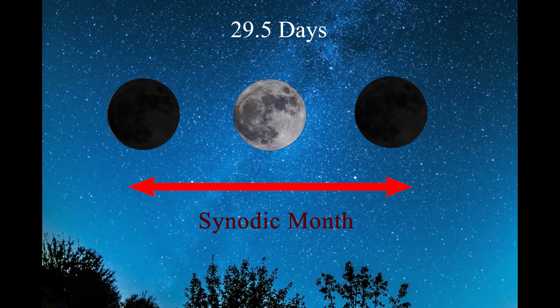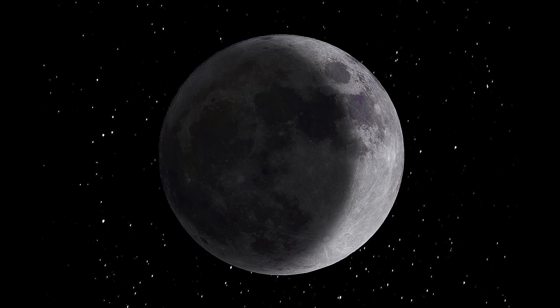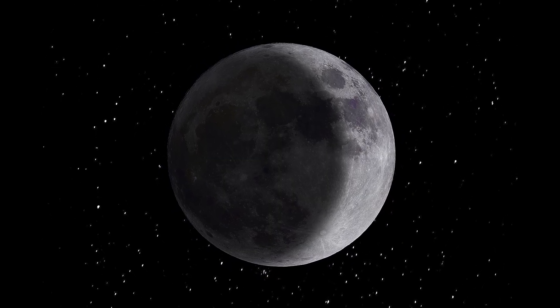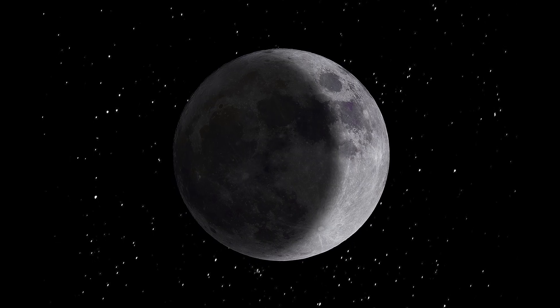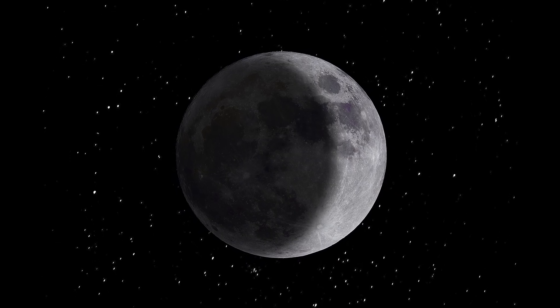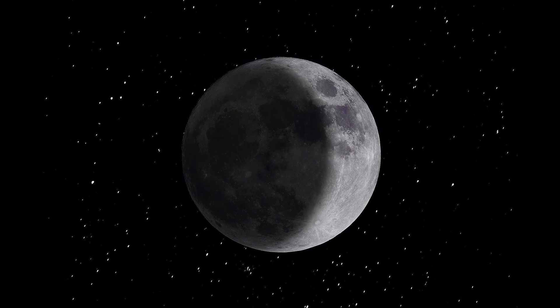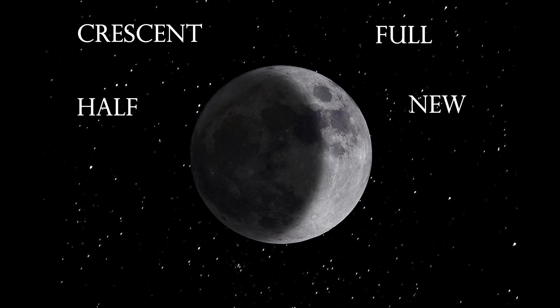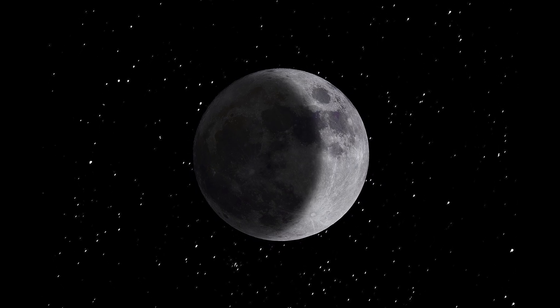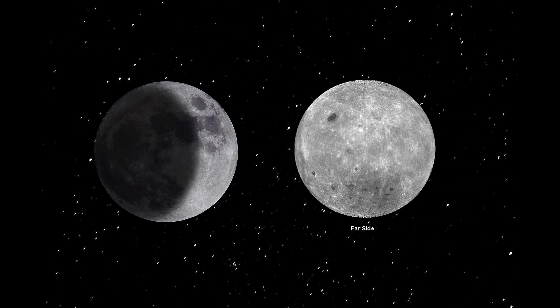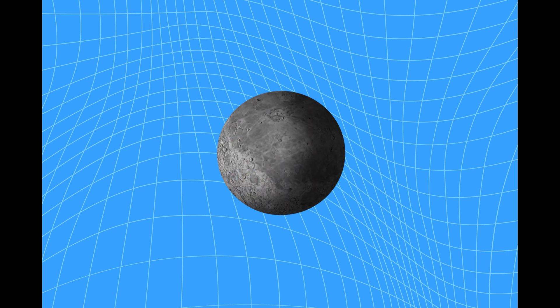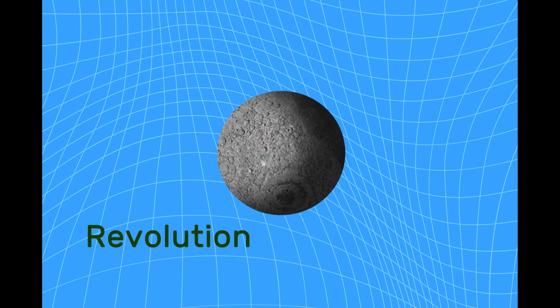Even though the shape of the moon seems to change, there's something that doesn't change at all — we always see the same side of the moon. No matter what phase the moon is in, crescent, half, full, or new, we're always looking at the same face and never get to see the other side from Earth.